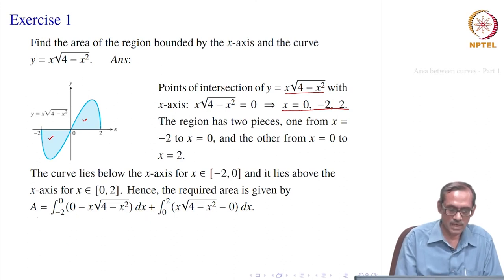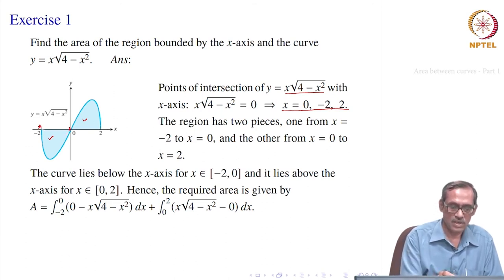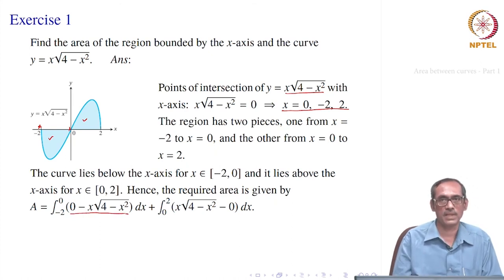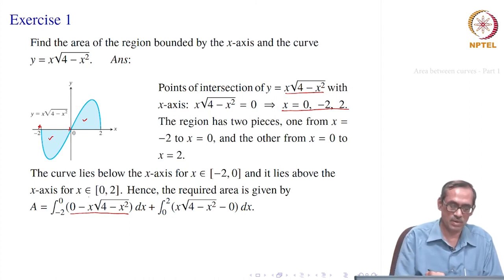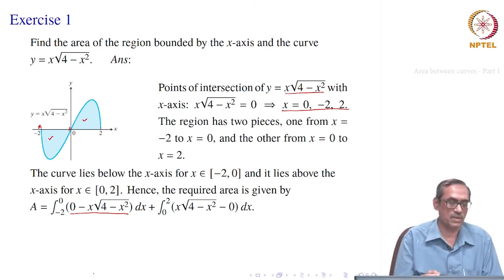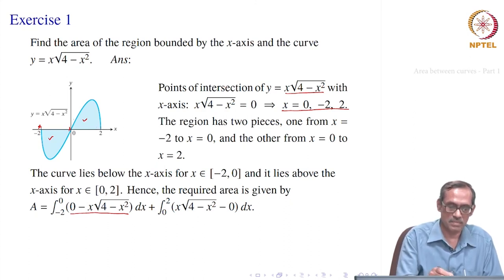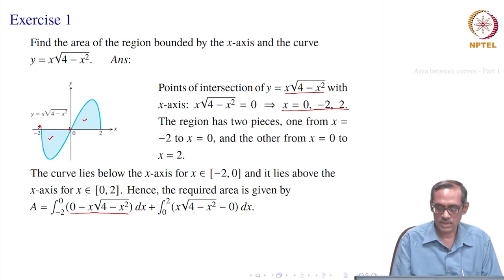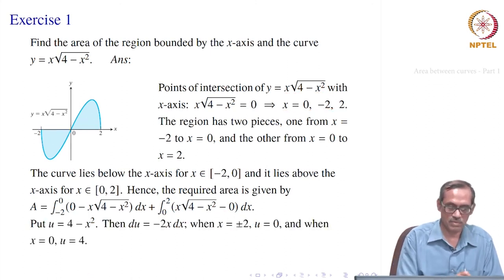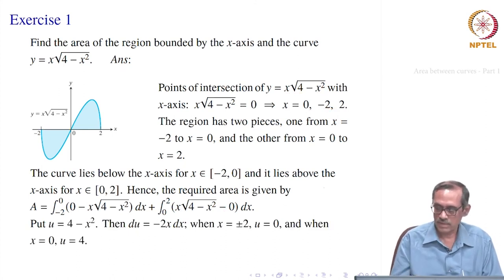The required area A equals the integral from −2 to 0 of [0 − x√(4 − x²)] dx plus the integral from 0 to 2 of [x√(4 − x²) − 0] dx. On [−2, 0], x is negative so the curve lies below the x-axis, hence the top curve is y = 0. On [0, 2], the curve lies above. Each piece must be computed separately and added together.